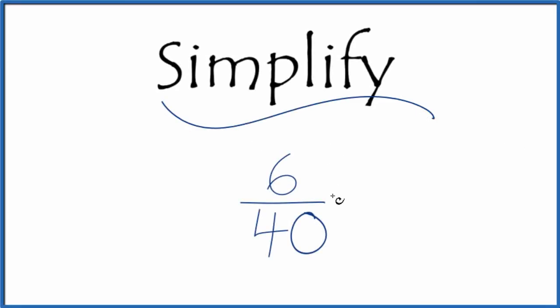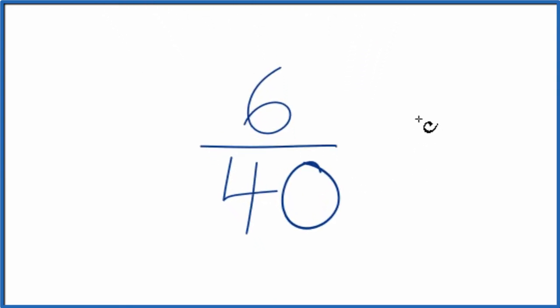All right, let's simplify the fraction 6/40. What we want to do is find another fraction that's equivalent—it has the same value as 6 over 40, but we've simplified it. We've reduced it to its lowest terms.